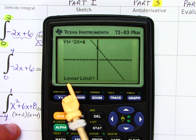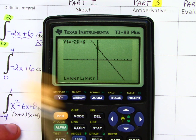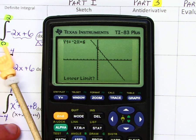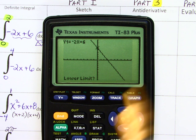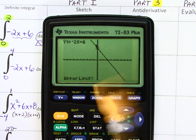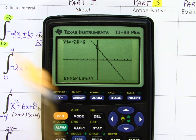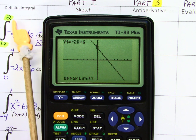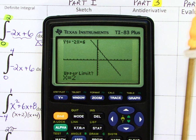And notice it's asking you for a lower limit. Now the lower limit is the lower bound. So I'm just going to put in 0, enter. Upper limit. The upper limit in this case is 2. Hit 2. Enter.